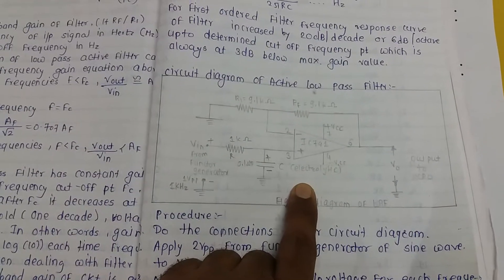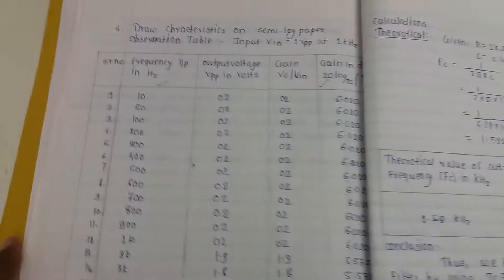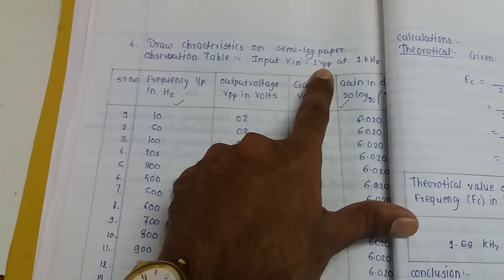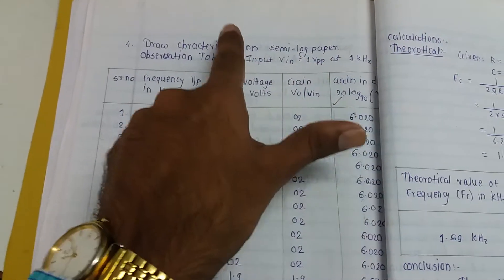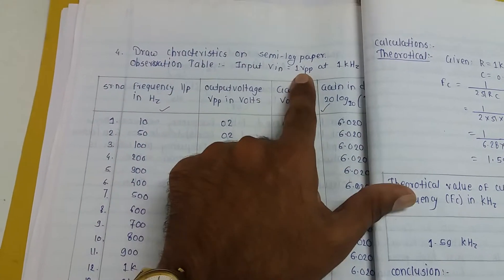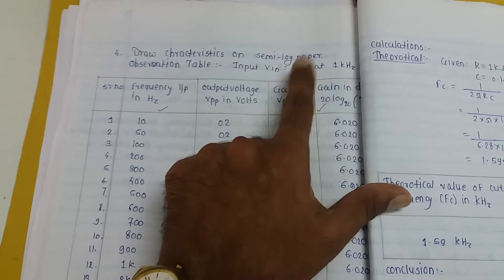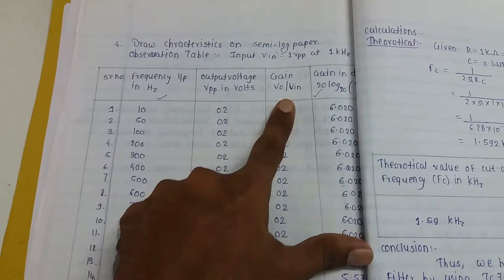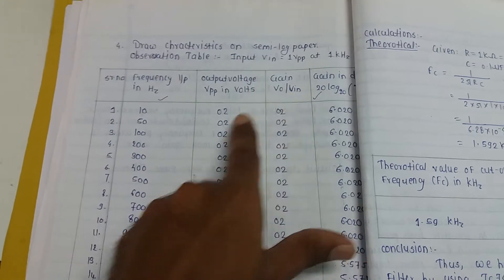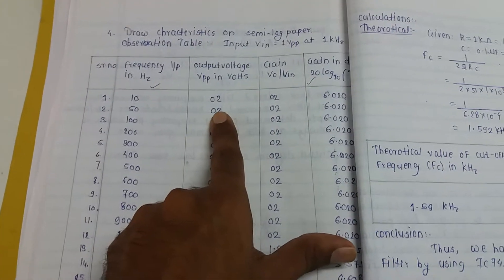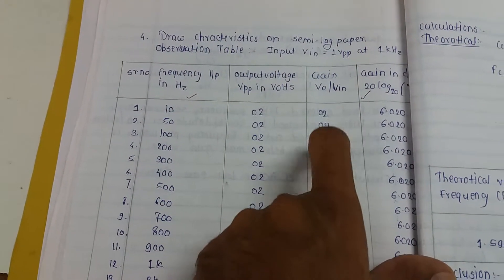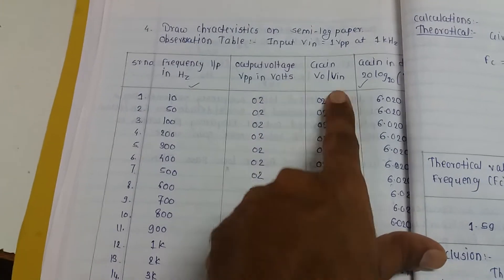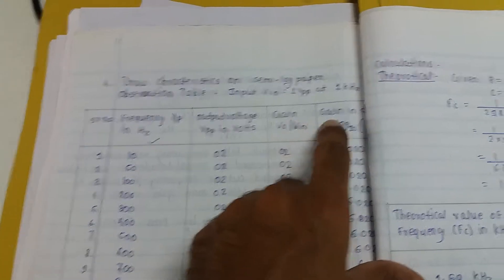Proceed with the experiment as per the procedure. Give the function generator input and see the result. V_in = 1 V. Connect the function generator to the CRO to set 1 V. For example, if V_output = 2 V, then gain = 2 divided by 1 = 2.